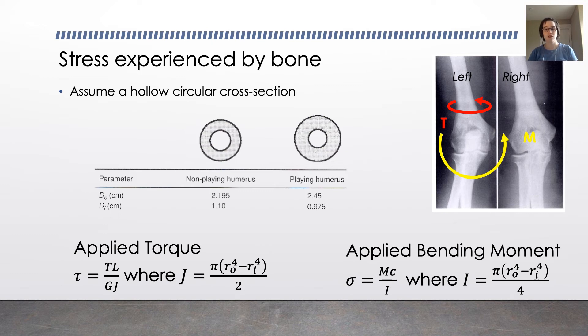And a larger r_o results in a larger i. And because stress is inversely proportional to i, a larger i value results in a smaller stress. So in both of these situations, the thickening of the bone, the making it bigger on the outside, results in a lower stress, which is why the body remodels that way.